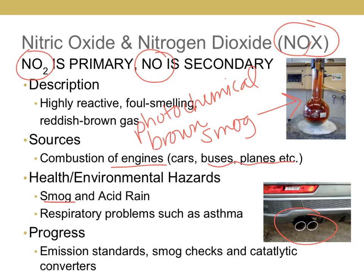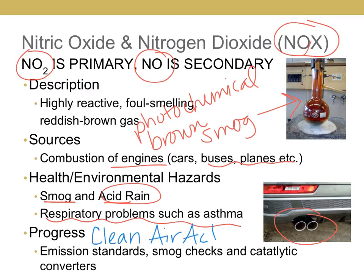NOx also causes acid rain, though it's not as large a culprit as SO2. California doesn't have major acid rain issues; that's more common back east where coal is burned for electricity. NOx causes respiratory problems such as asthma. To improve NOx levels, emission standards from the Clean Air Act require smog checks every two years in California, and catalytic converters clean up both carbon monoxide and NOx.